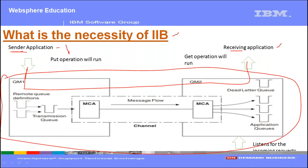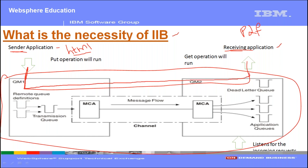—because that is the business requirement of the sender application, it can generate and understand only HTML format messages. The receiving application can understand only PDF formatted messages. Now when the sending application sends an HTML message via MQ to the receiving application, the receiving application receives the HTML message but it cannot process it, because its business requirement is to process only PDF messages.